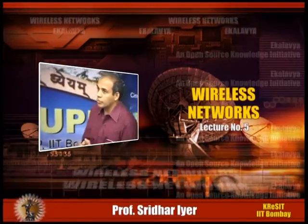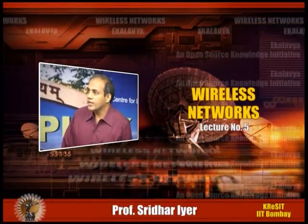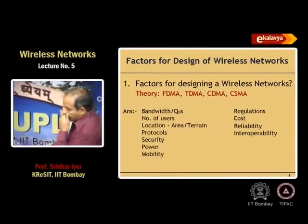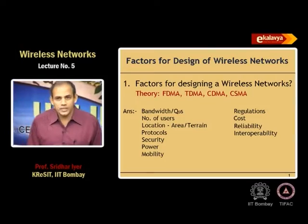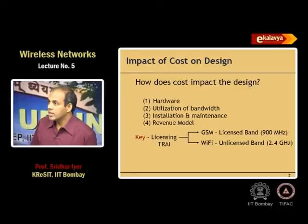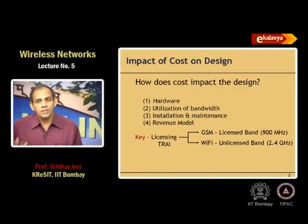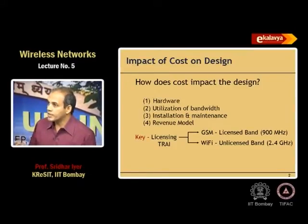Today's plan is to start with wireless LANs, the other side of wireless networks, and then towards the end look at applications. In the last class we looked at the factors for designing wireless networks and arrived at cost as the key factor. We then saw how cost impacts design, finding that licensing played a major role. Because licensing was so expensive, GSM had a goal of maximizing spectral efficiency.